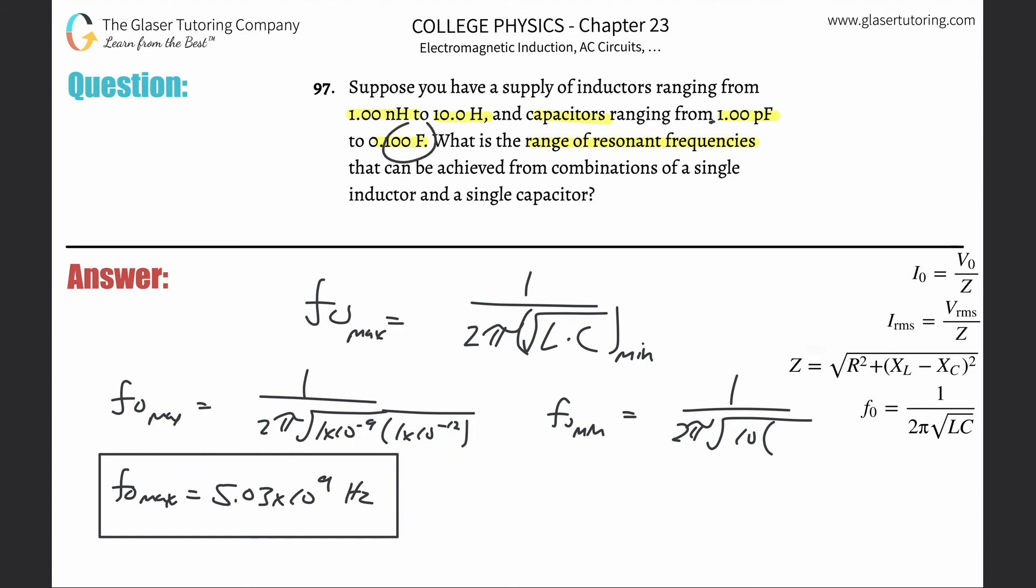They're already in the right unit, so I didn't have to do any conversions. Let's see what we get: one divided by—well, 10 times 0.1 is 1, square root of 1 is 1, so it's really just one divided by two pi. But I'm going to plug everything in.